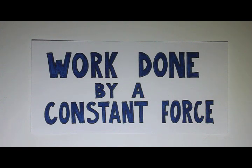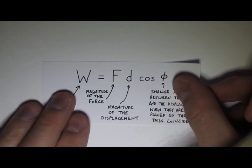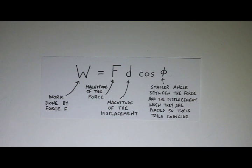Okay, we're going to continue looking at work done by a constant force. Just as a reminder, the definition of work is the magnitude of the force times the magnitude of the displacement times the cosine of phi, where phi is the smaller angle between the force vector and the displacement vector when they're placed so that their tails coincide.